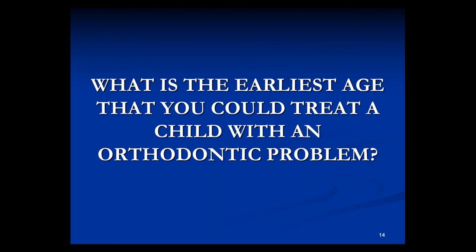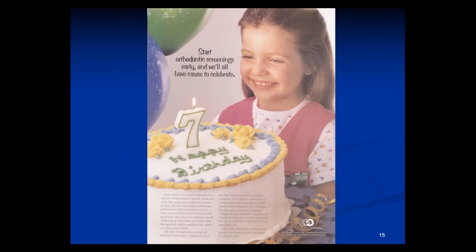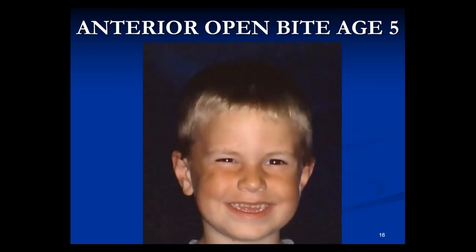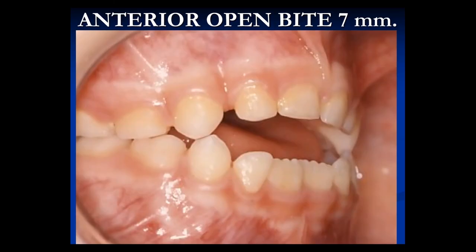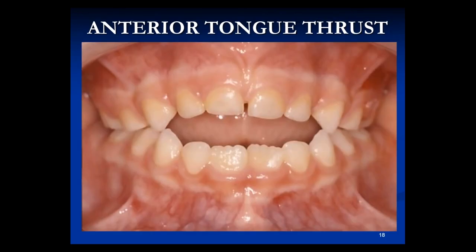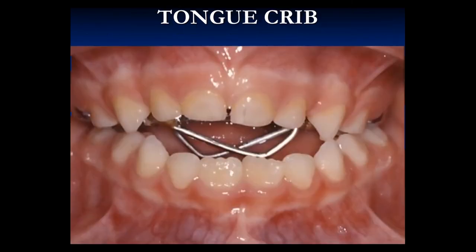What is the earliest age you could treat a child with an orthodontic problem? We start some kids at age five. Certainly seven is a very good age because they're very cooperative. Seven, eight, nine is a fantastic age to treat. Here's a little guy who's five years old with an anterior tongue thrust. It's affecting his speech and everything about him — he talks funny and can't chew his food. His front teeth don't touch; there's a 7-millimeter space because the tongue is going between the teeth 2,000 times a day. If you don't stop that tongue thrust, he'll still have it when he's 20, when he's 30.